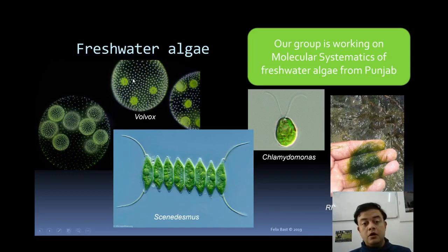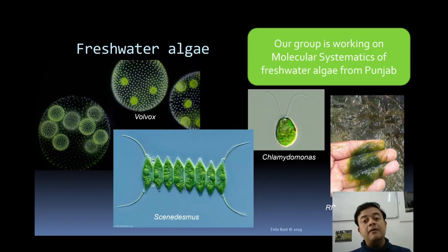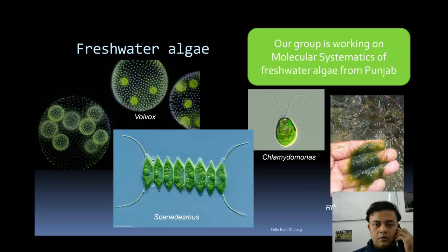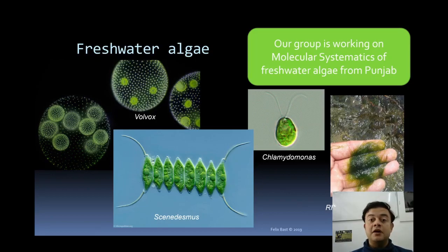Examples of limnetic (freshwater) algae include Volvox — a beautiful colonial globule with division of labor — which is often used to infer how eukaryotes evolved from prokaryotes and how multicellularity and division of labor developed. Other examples of freshwater algae include Chlamydomonas, Scenedesmus, and Rhizoclonium. Our lab is also investigating freshwater algal biodiversity in Punjab.